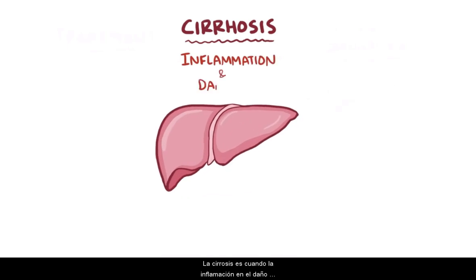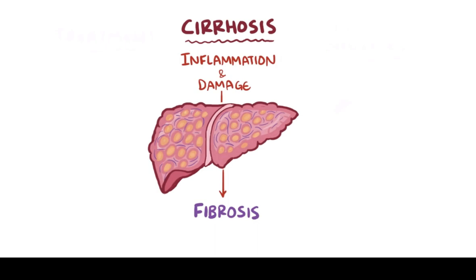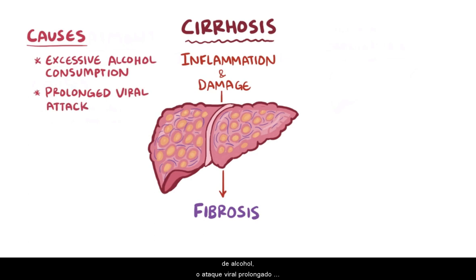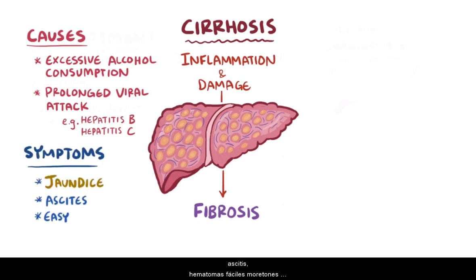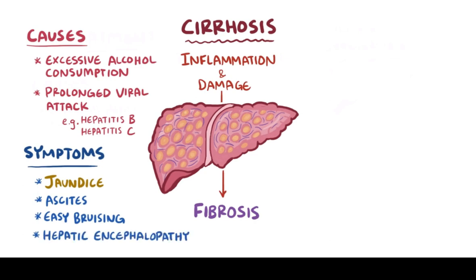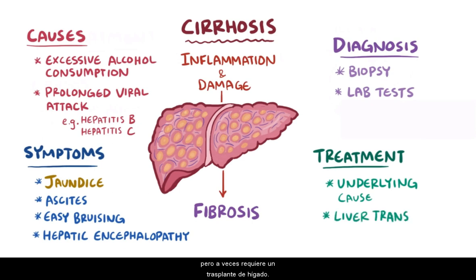As a quick recap: cirrhosis is when inflammation and liver damage causes the liver to become fibrotic and develop scar tissue. Causes include excessive alcohol consumption or prolonged viral attack like from hepatitis B or hepatitis C virus. Over time, as the liver becomes less functional, symptoms like jaundice, ascites, easy bruising, and hepatic encephalopathy develop. Diagnosis is often done with a biopsy or through lab tests, and treatment for advanced cirrhosis is to treat the underlying cause — but sometimes a liver transplant is required.